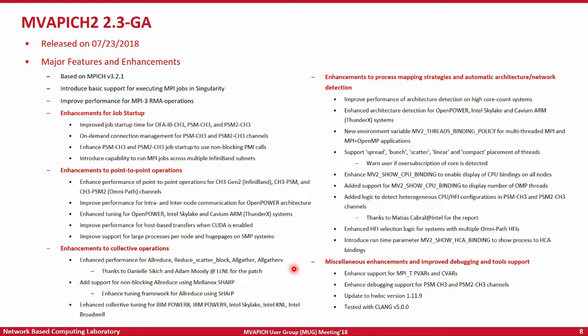This is a list of features — a laundry list — so I am not going to go over this. The slides will be available online, so please check that if you are interested. But at a high level, we have a lot of interesting features like enhancements for job startup, point-to-point operations, collective operations, and process mapping strategies. This is actually very important as we go into the multi-many-core era. You need to have good process mapping strategies; otherwise you will get pretty bad performance, as was seen in a couple of talks back. Professor Hanawa from Tokyo Institute of Technology mentioned that with poor process mapping strategies, the jobs don't even start up.